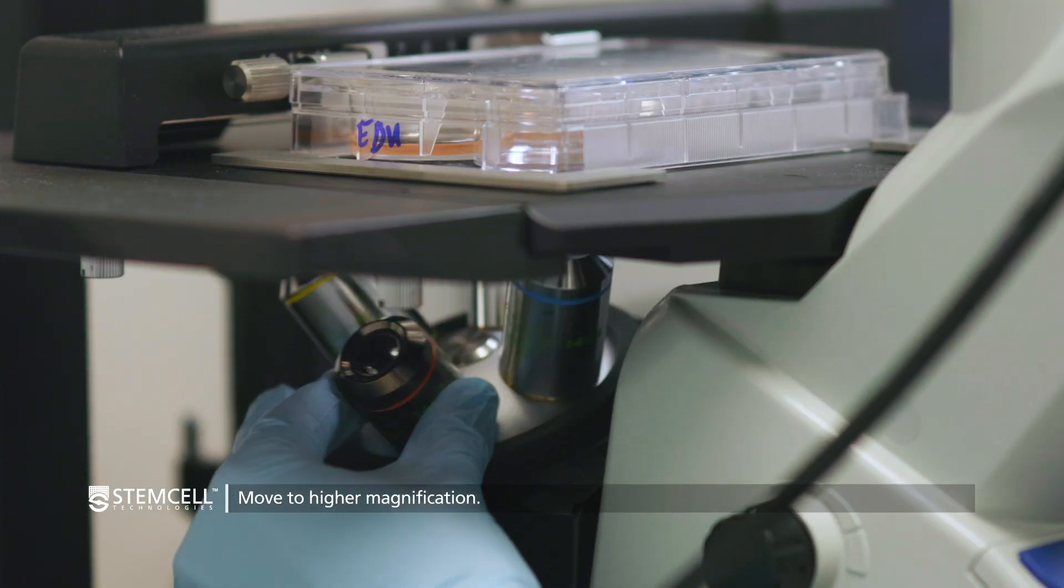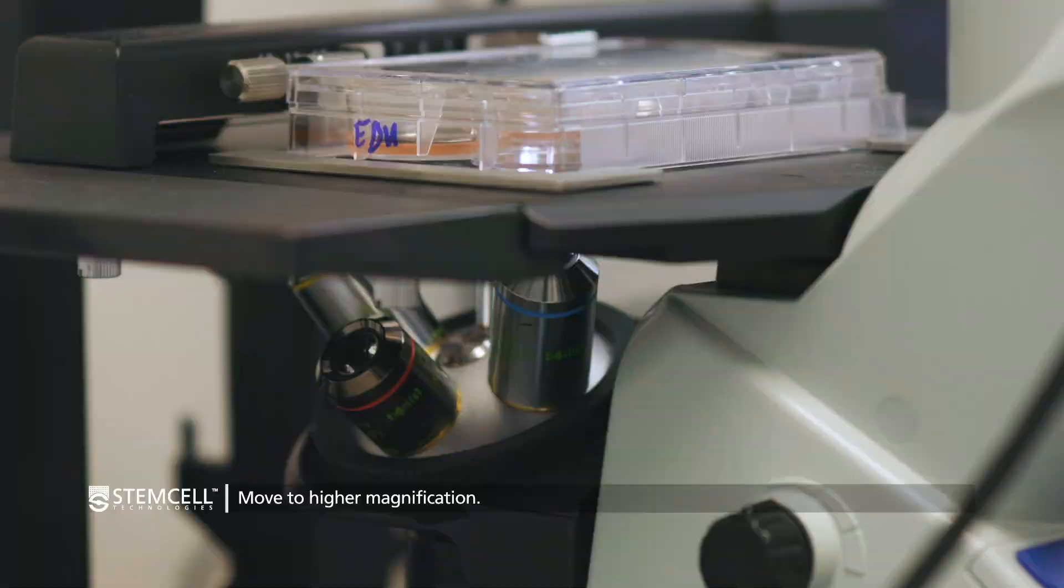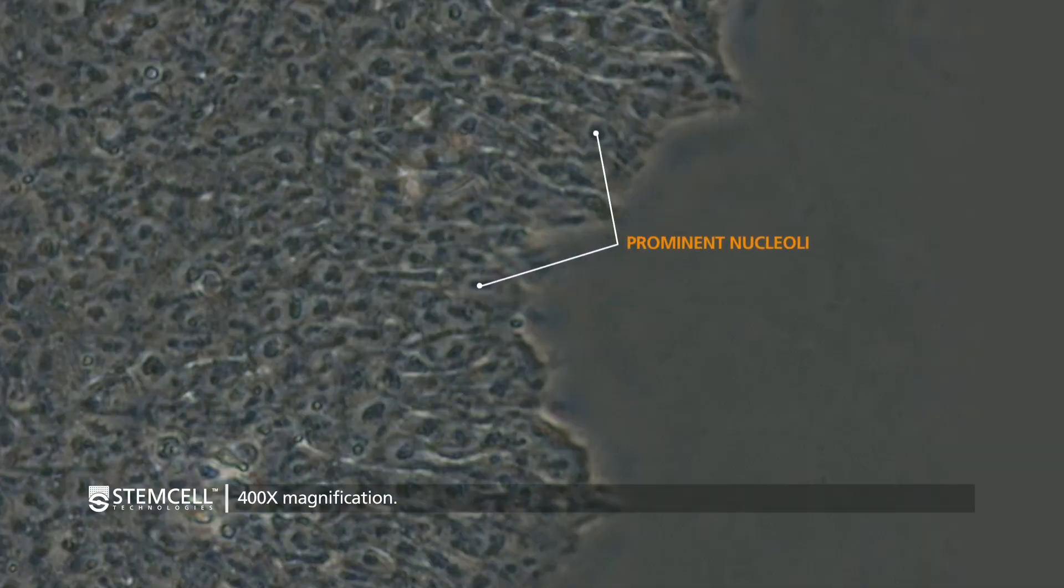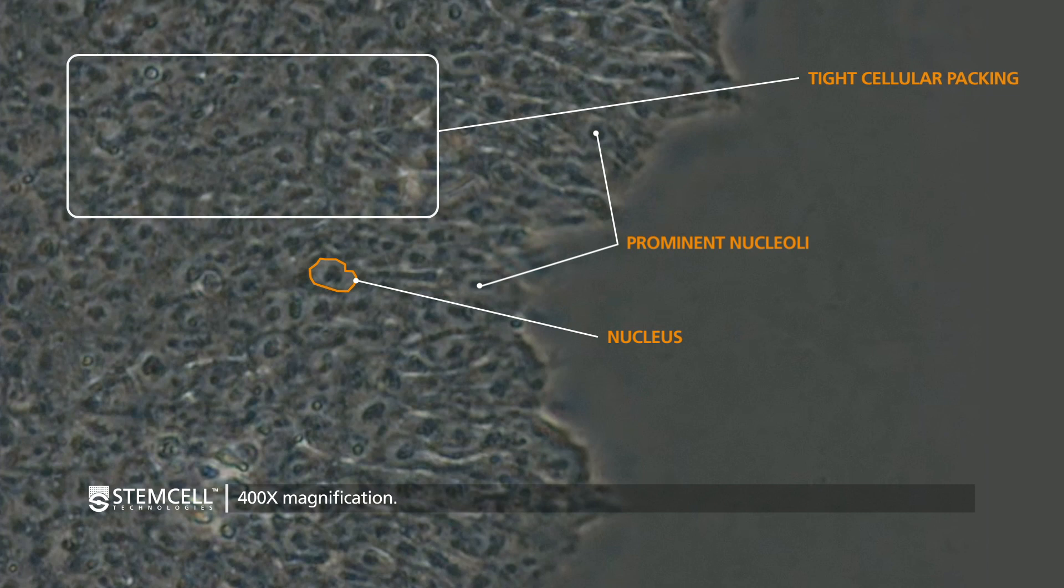Moving to higher magnifications, healthy PSC colonies will possess prominent nucleoli, have a high nucleus to cytoplasm ratio in that the nucleus will practically occupy the entire cell, and the tight cellular packing should be even more evident than what is observed at low magnification.